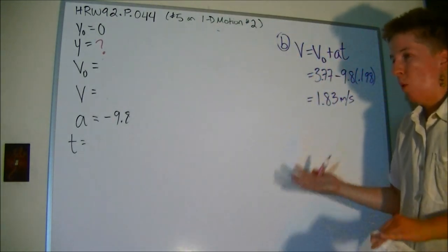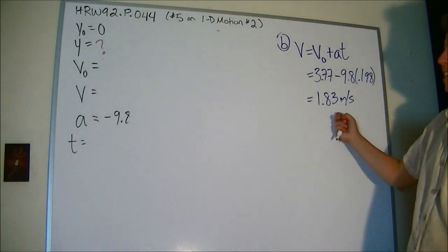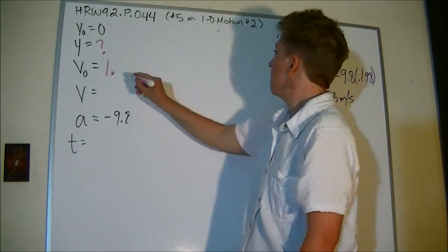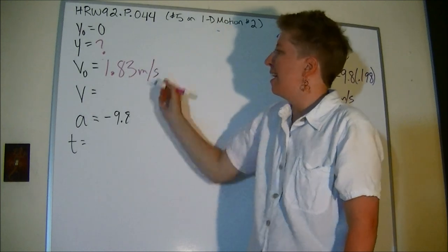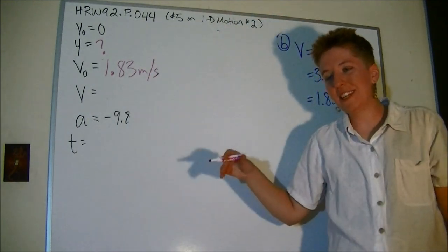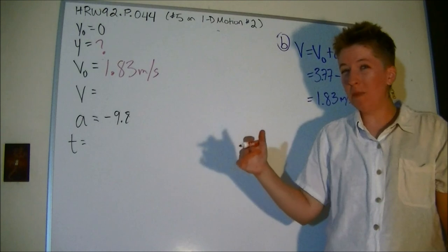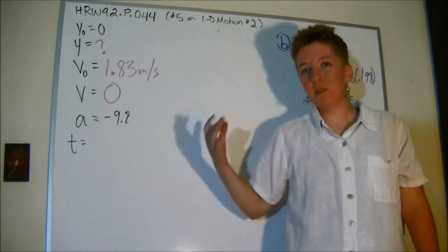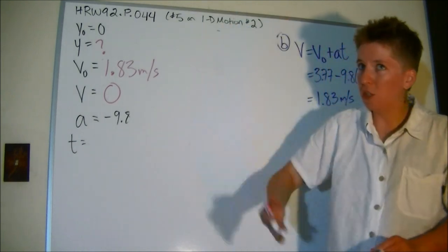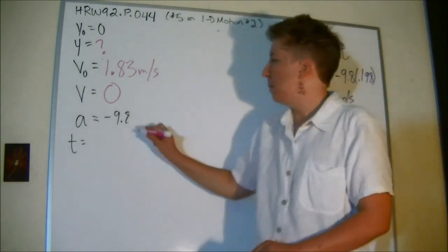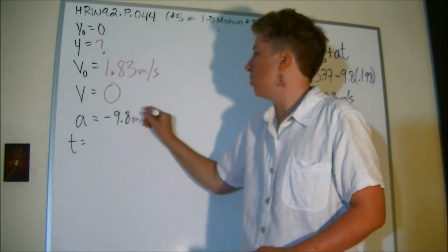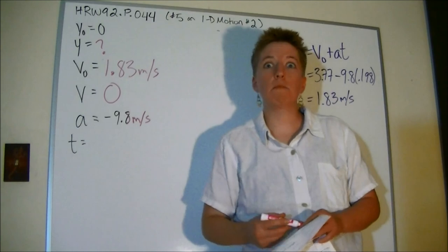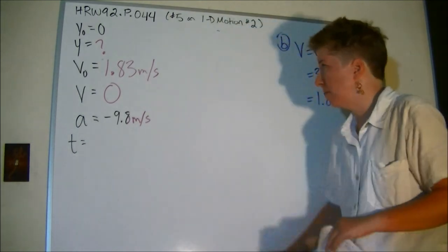Where it started, what its velocity was, V naught was not what it used to jump off the ground. It was what it was at that point at the beginning of the problem, which is this that we just found. And I know that if it's going to get to its highest point, then the velocity at the end has to be zero because velocity is zero at the highest point in one-dimensional vertical motion. This is the same, still gravity, and time I don't know and I don't care.